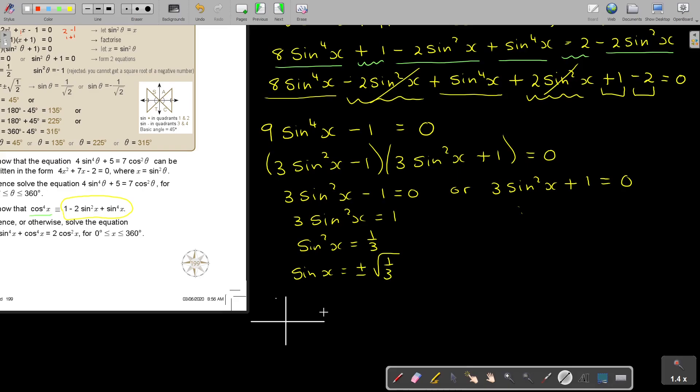Remember, this is my sketch. Now where is sin positive? It's positive and negative. So my basic angle, I can just find my basic angle here. So press on your calculator. First, don't forget to take the square root off. So go square root, bracket, 1, divide, 3, close the bracket, equals. It's 0.577. Then shift, because I go to angles, and then it's sin.